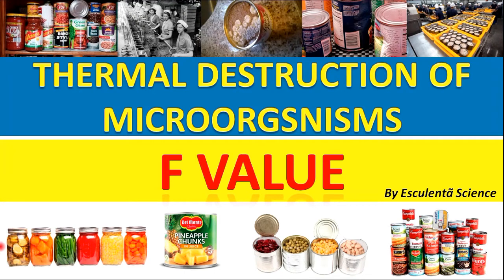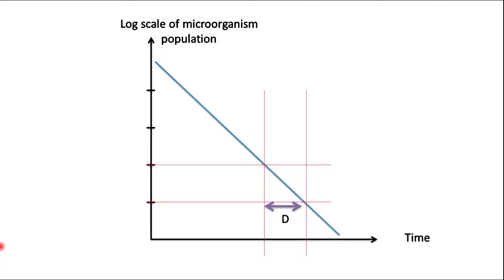During our previous lesson on D value, we learned that to obtain required parameters, we can convert the survival curve to a log scale, then we can get a graph like this.